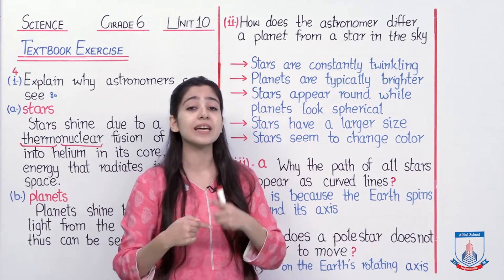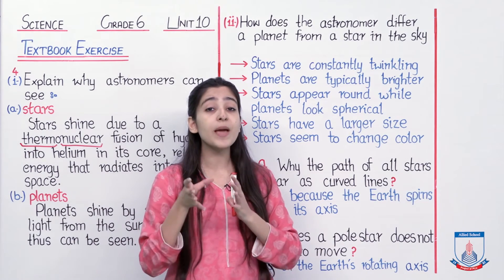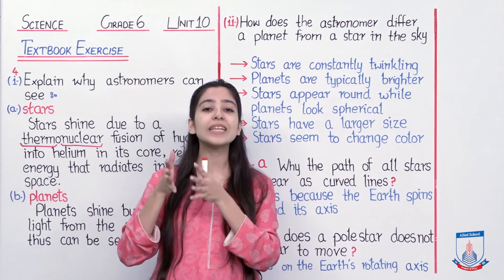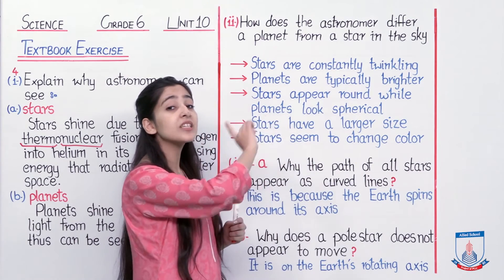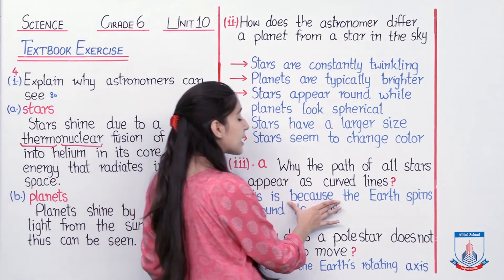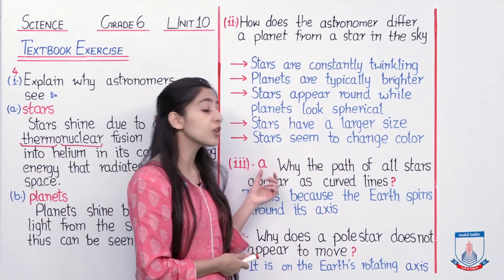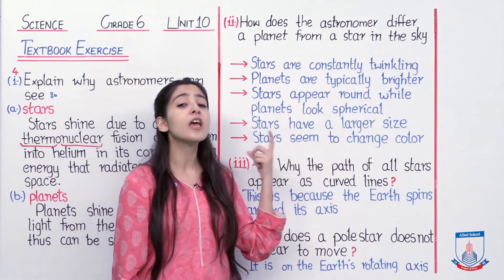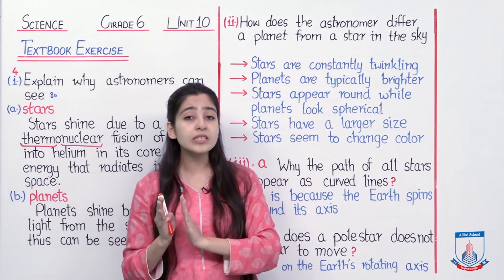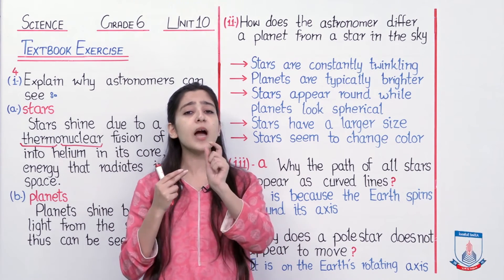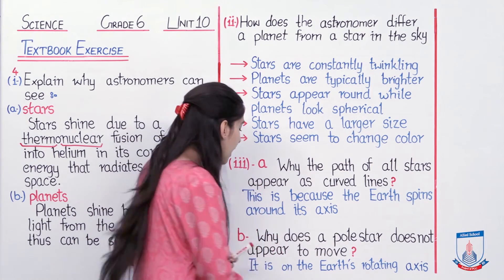Jahaan par hum maujood hain, humein pata nahi chalta ke this earth, jahaan par hum khade hue hain, is actually spinning continuously around its axis. Aur yahi wajah hai — jab hum picture lete hain stars ki, toh humein woh nazar aata hai as curved lines. So iske answer mein aap likhenge: this is because the earth spins around its axis. Yeh tha answer to part A. Hamaari jo stars hain, agar hum unki picture lein, toh unki movement curved shape mein kyun nazar aati hai? Isi liye nazar aati hai kyunke hamaara jo earth hai, woh lagataar spin kar raha hai, aur jab woh spin kar raha hai toh ek jagah pe maujood jo stars hain, woh humein rotate hote hue curved position mein nazar aati hain.